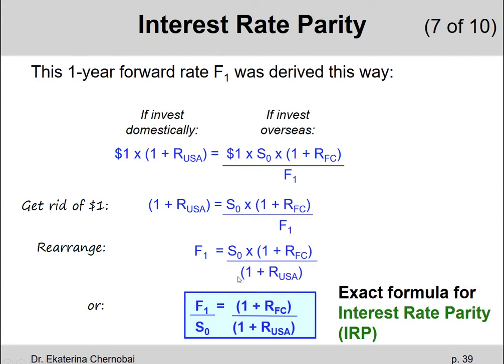Or let's rewrite it the way that fits the definition of the so-called Interest Rate Parity formula. Where it says that the one year forward rate divided by the spot exchange rate today equals 1 plus the interest rate in the foreign country for the risk-free asset divided by 1 plus the rate for the risk-free asset in the United States.